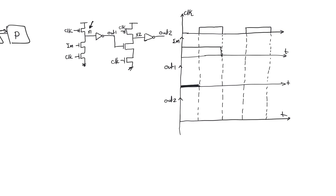Notice that out-one is always the inversion of X1 with a propagation delay, and out-two is always the inversion of X2. Whether we are in the pre-charge phase or the evaluate phase, it doesn't matter because these inverters are static inverters. If these inverters were dynamic inverters themselves, we would have cascaded the problem and made it bigger. So they have to be static inverters.